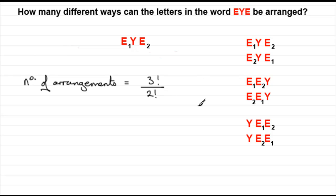So what we get now is basically three times two times one, for three factorial, divided by the two factorial, two times one. And if you work this out, you can cancel out the two times one, top and bottom, and you're left with three. Three different arrangements of the word EYE.